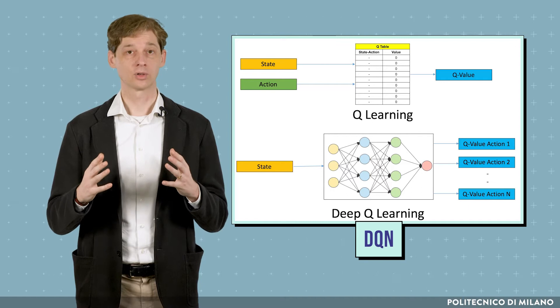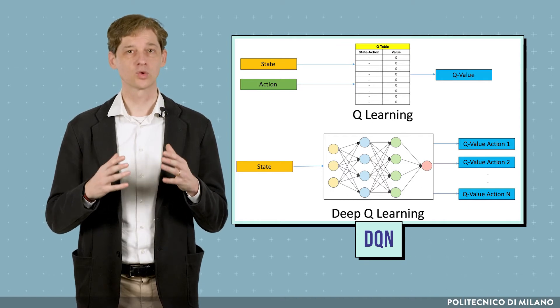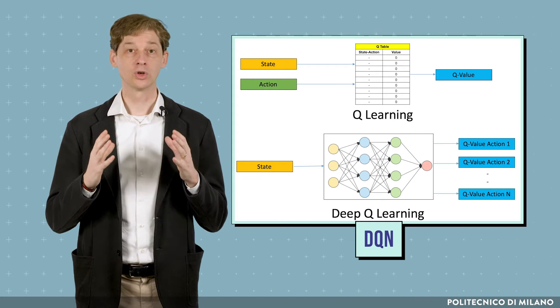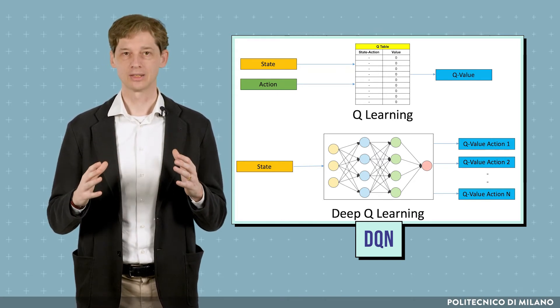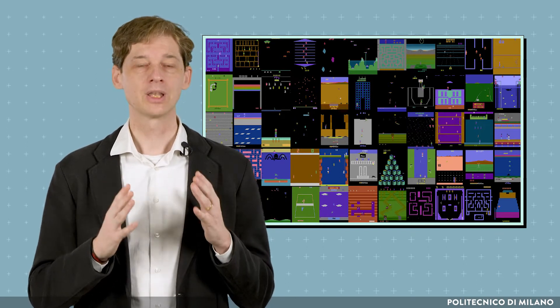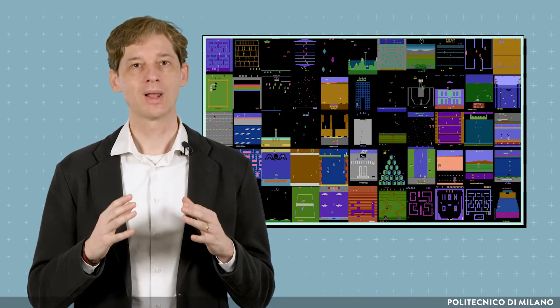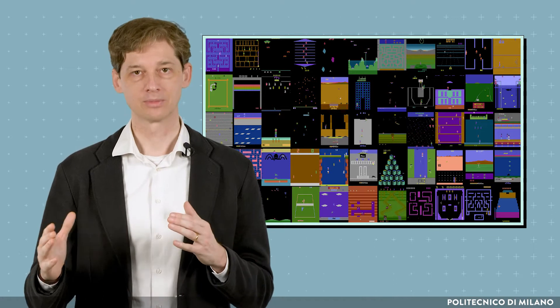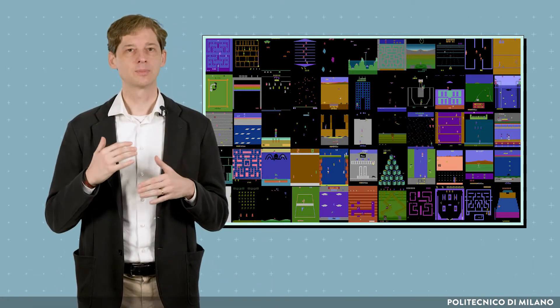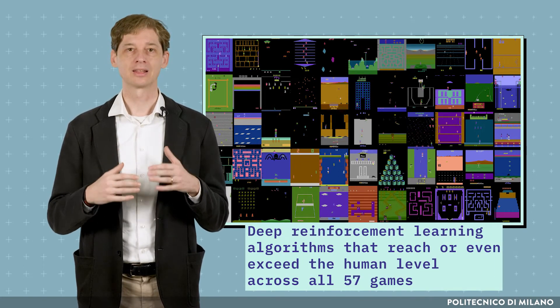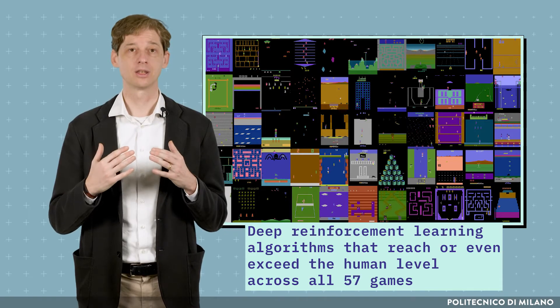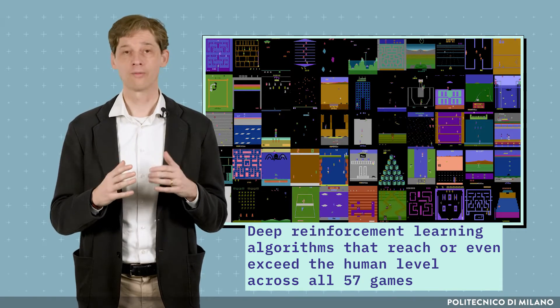In DQN, the value function is approximated using a convolutional neural network, which allows the algorithm to learn in decision-making problems with an extremely large number of states. Originally, DQN was used to train agents to play 57 Atari games directly from pixel input, achieving human-level performance in most games. Since then, DQN has been improved in many ways, and we now have deeper reinforcement learning algorithms that reach or even exceed human level across all 57 games.